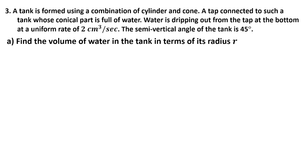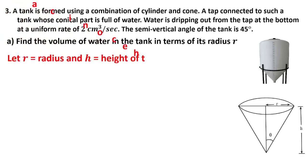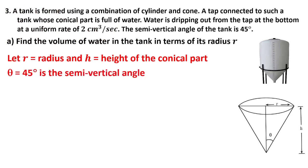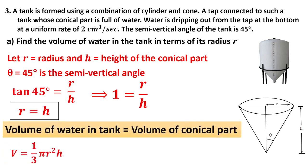Question number 3: A tank is formed using a combination of cylinder and cone. The whole conical part is full of water and water is dripping out. Find the volume of the water in terms of radius R. The vertical angle is 45 degrees, therefore tan 45 equals R by H. Radius equals height. Now the volume is 1/3 π R² H. Because only the conical part contains water, therefore it is 1/3 π R³. Volume of the water in terms of R is π/3 R³.